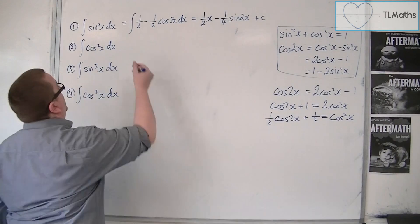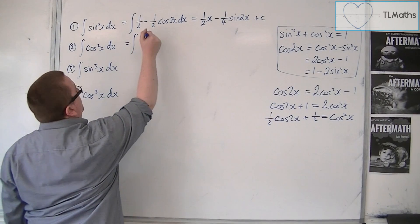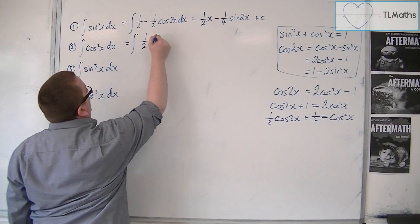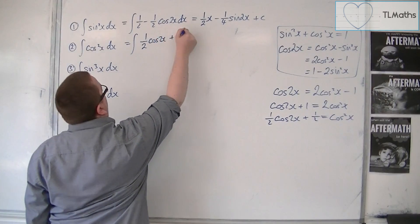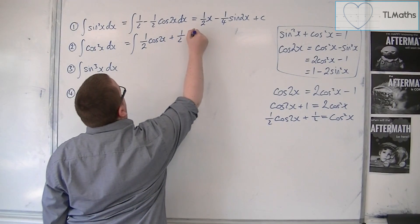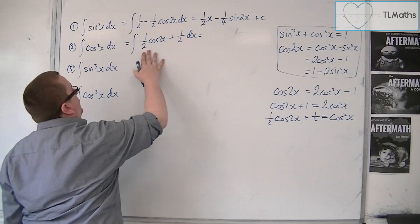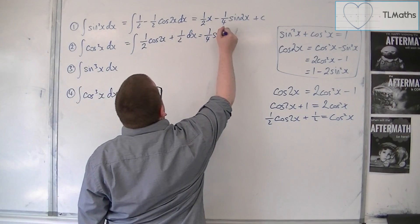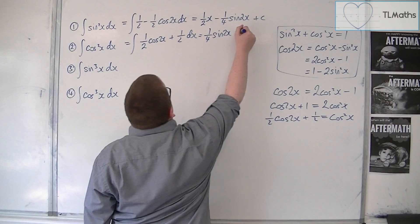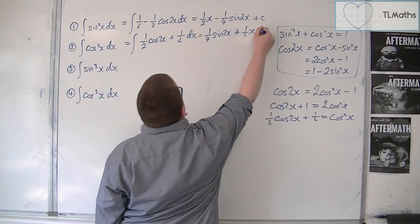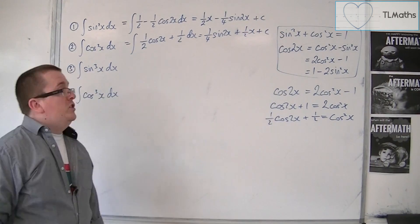So I can replace the cos squared in the integral with 1 half cos2x plus a half dx. The half cos2x is going to integrate to a quarter sine2x. And the half integrates to a half x. And you've got that plus c constant of integration.